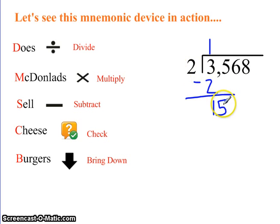2 goes into 15 how many times? It goes in 7 times. 7 times 2 is 14. Now I'm going to subtract. 15 minus 14 is 1. I'm going to check. 1 is less than 2.